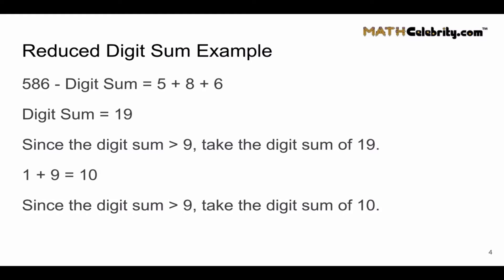But wait, since the digit sum is greater than 9, we've got to do it again. This time we're going to take the digit sum of 10: 1 plus 0 equals 1.